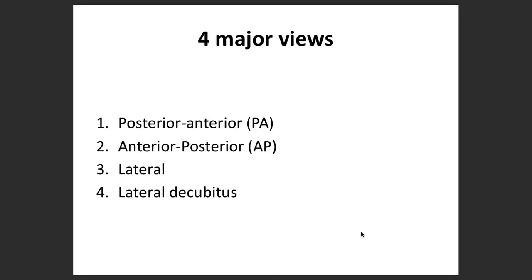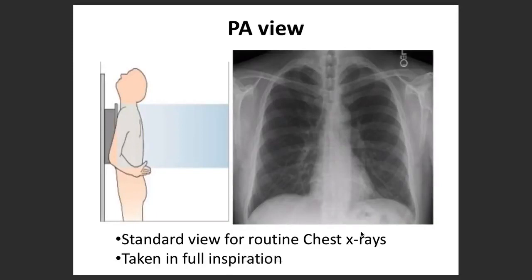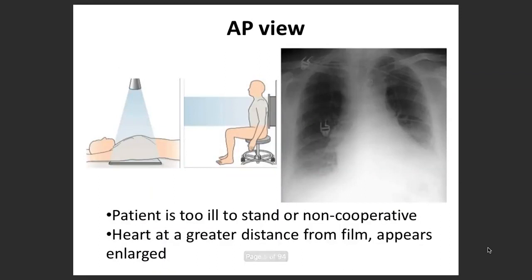About the views: the PA view — postero-anterior view — is the standard view taken for routine chest X-rays, taken in full inspiration. Coming to the AP view, those patients are often a little sick and not able to stand or non-cooperative. In the AP view, the heart is at a greater distance from the film and therefore appears enlarged. So don't be in a hurry to make a diagnosis of cardiomegaly in this view.